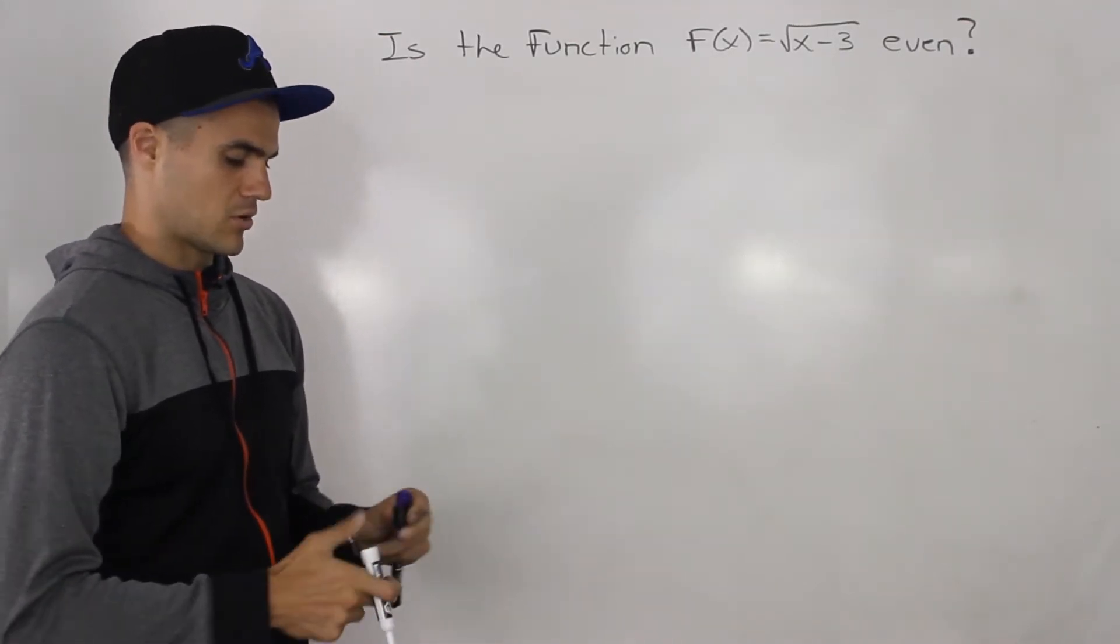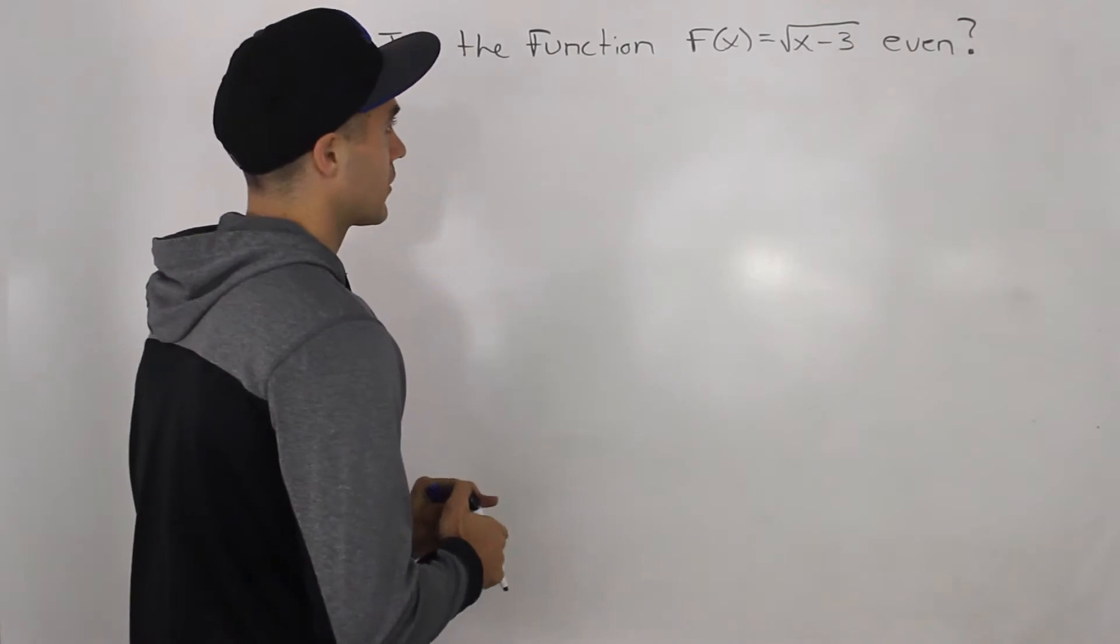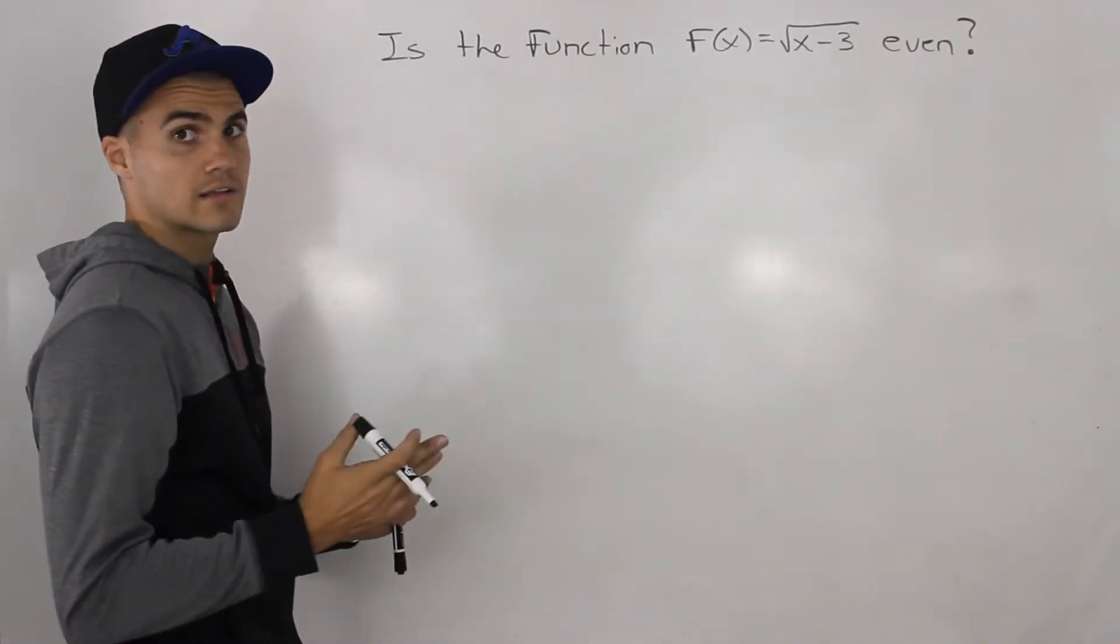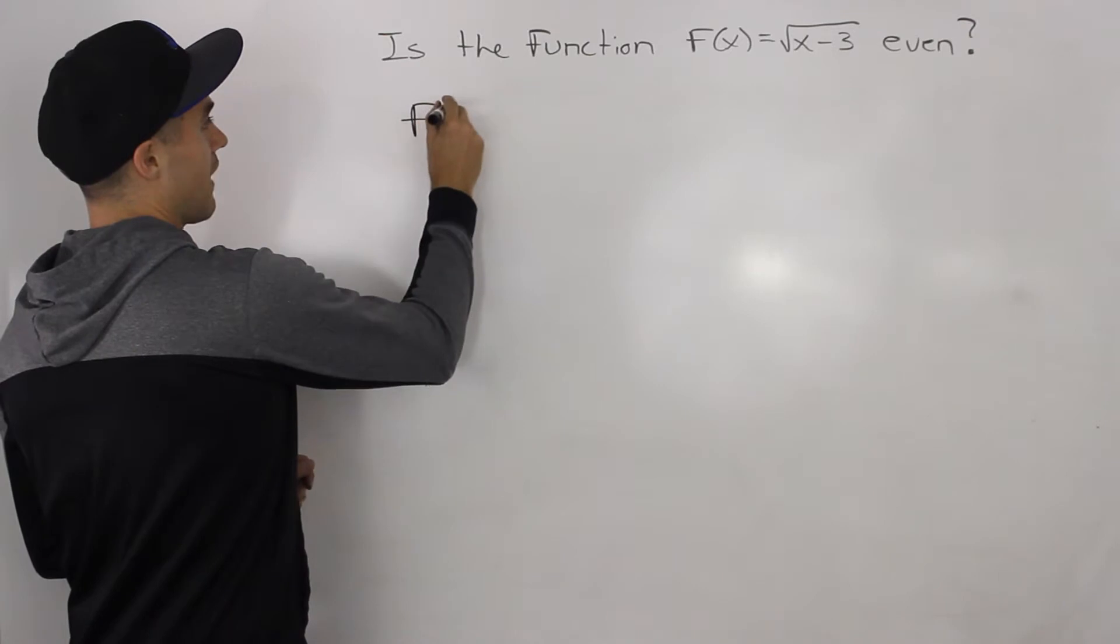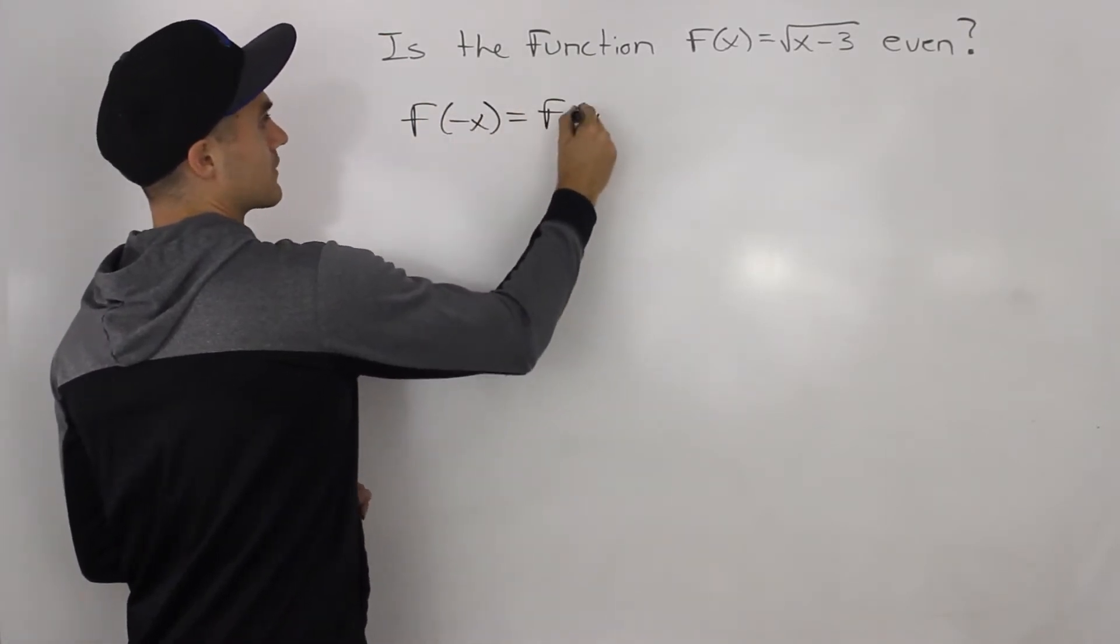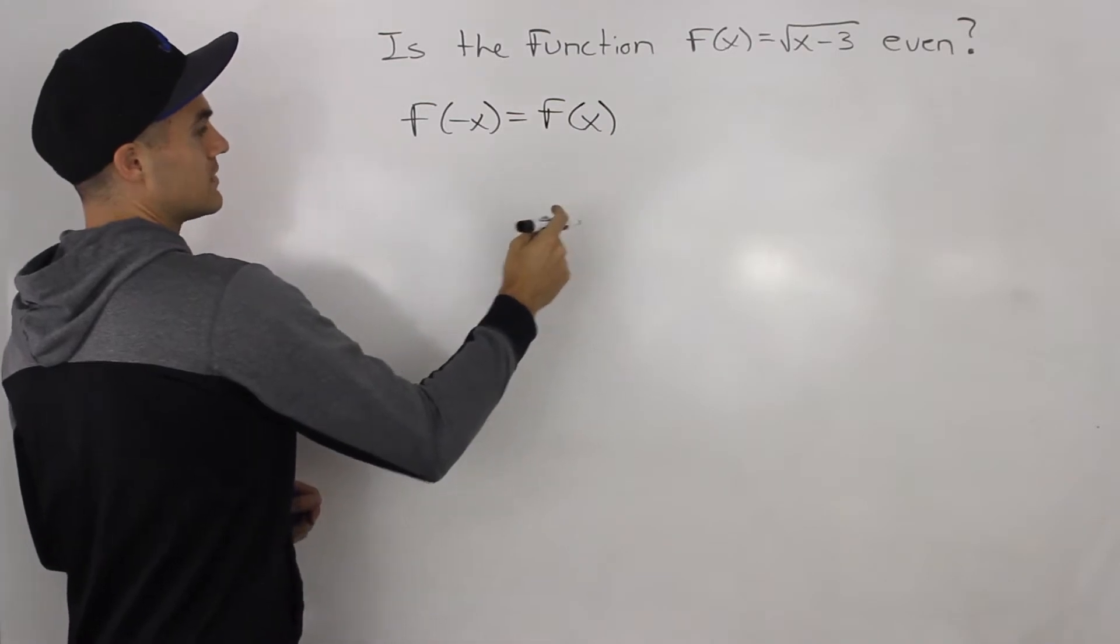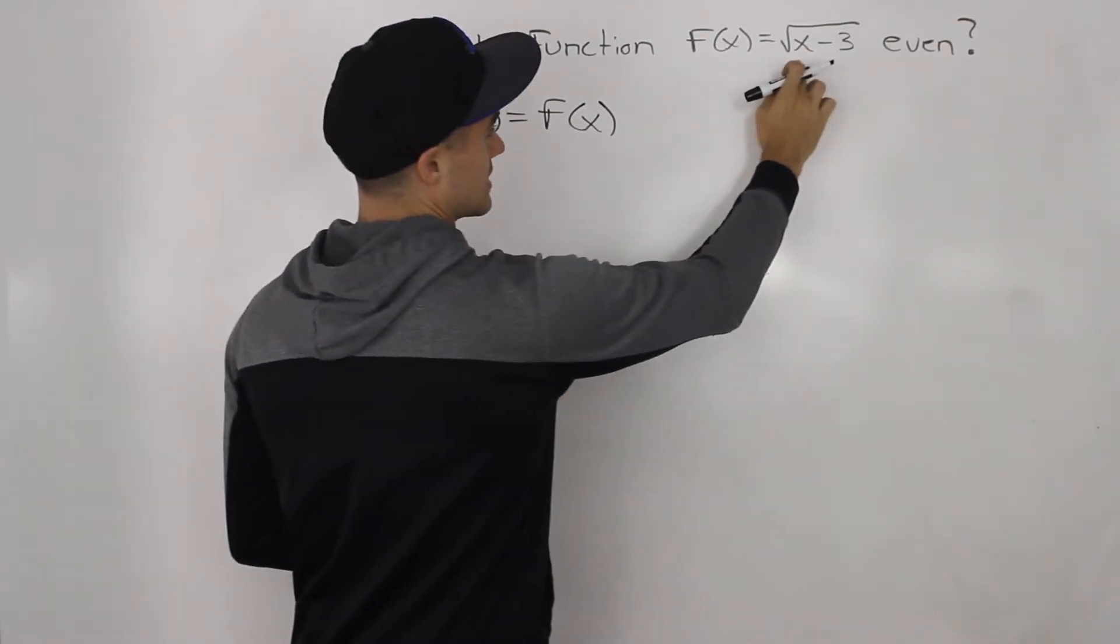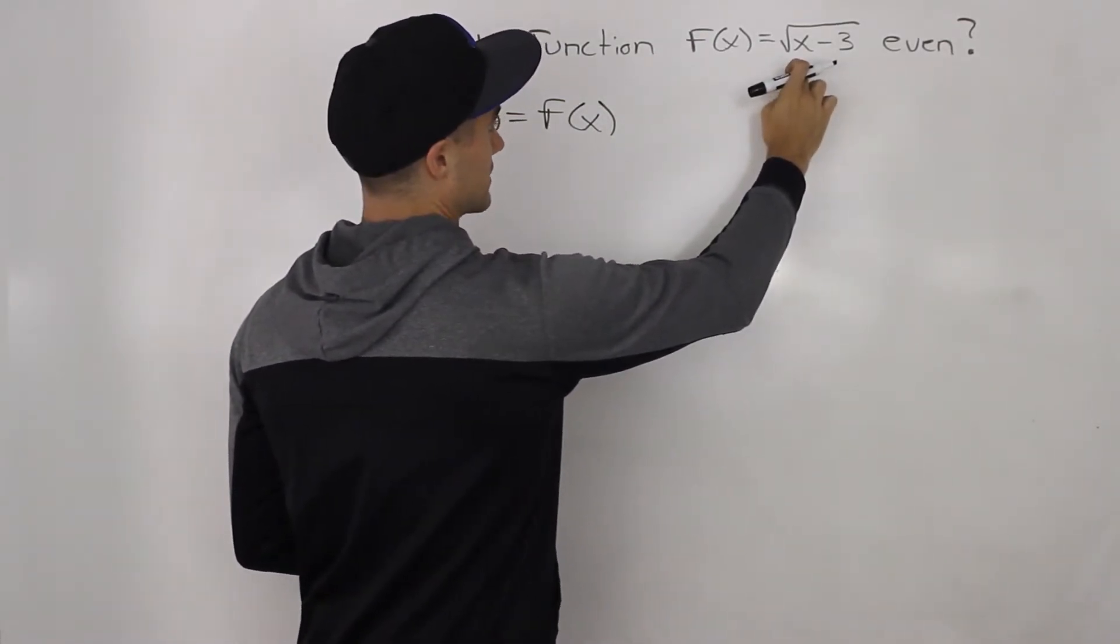So we're going to do this in multiple ways. Now, if you remember, algebraically, a function is even if f of negative x is equal to f of x. Right? So we know f of x, in this case, is the square root of x minus 3.